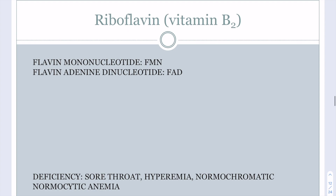Riboflavin is vitamin B2, important for two cofactors: FMN (flavin mononucleotide) and FAD (flavin adenine dinucleotide). Similar to NAD and NADP, these move electrons in the form of hydrogens — both accepting two hydrogens. Unlike NAD and NADP, FMN and FAD are tightly bound to their flavoenzymes and cannot move around freely; they must stay with the enzyme to perform the reaction, otherwise they release their hydrogens and become non-functional.